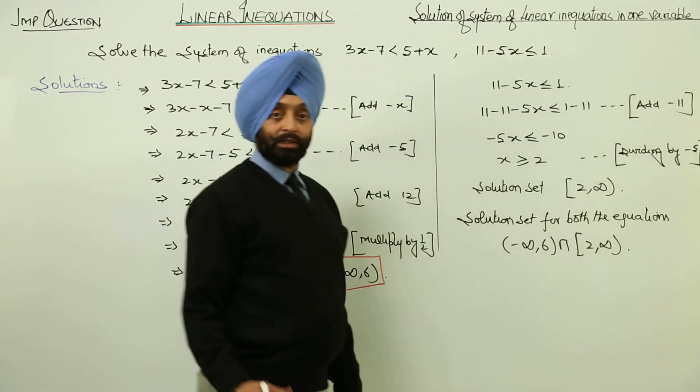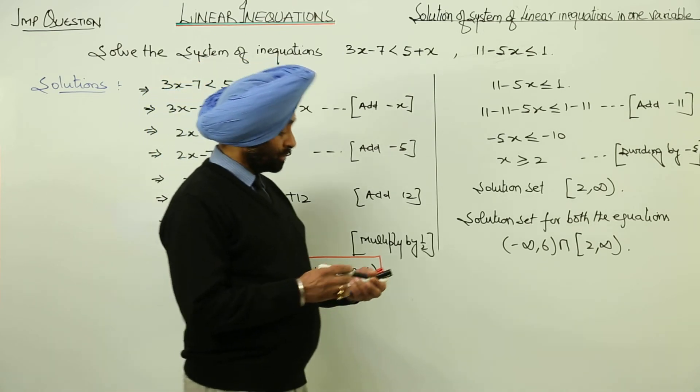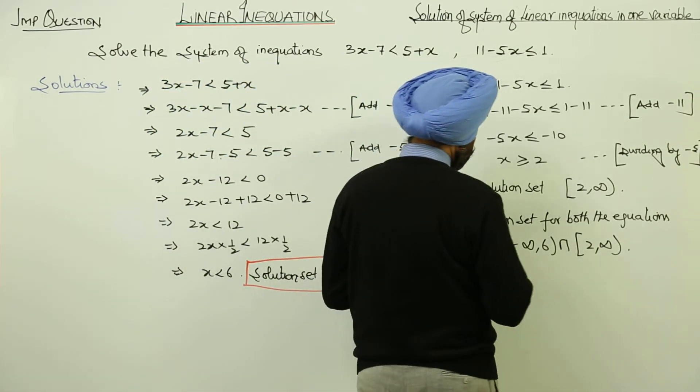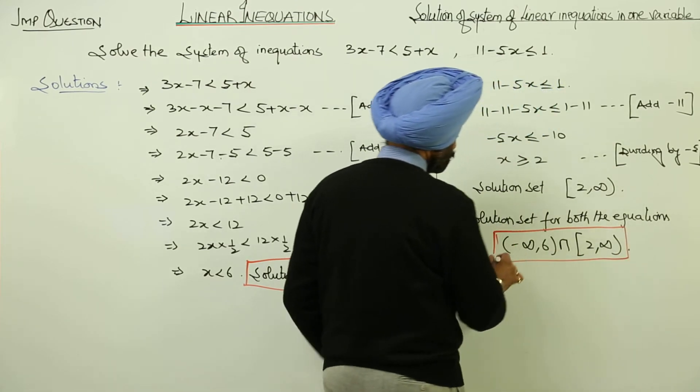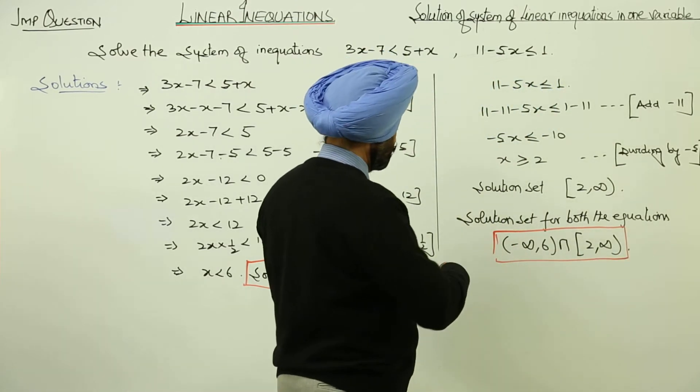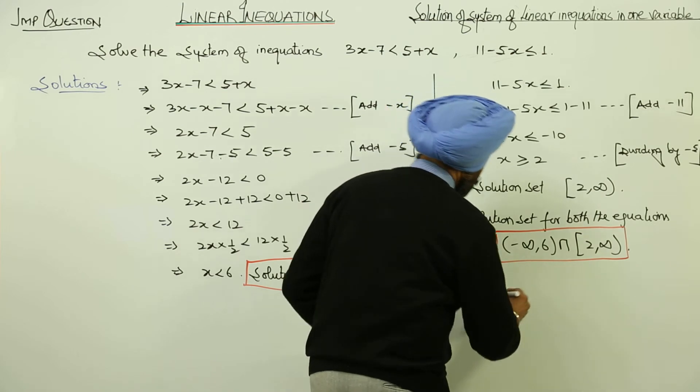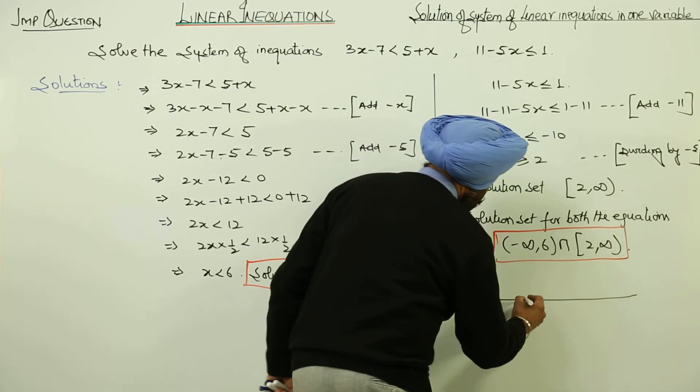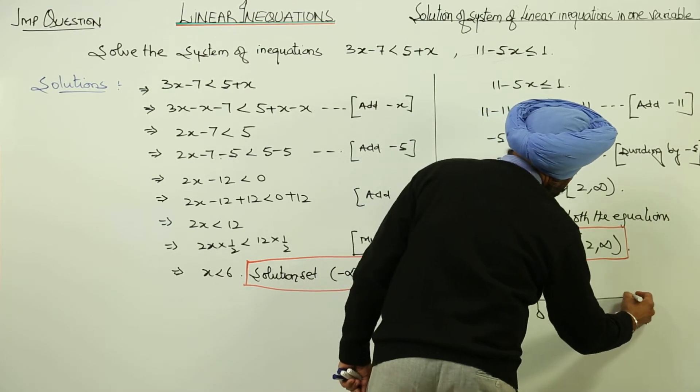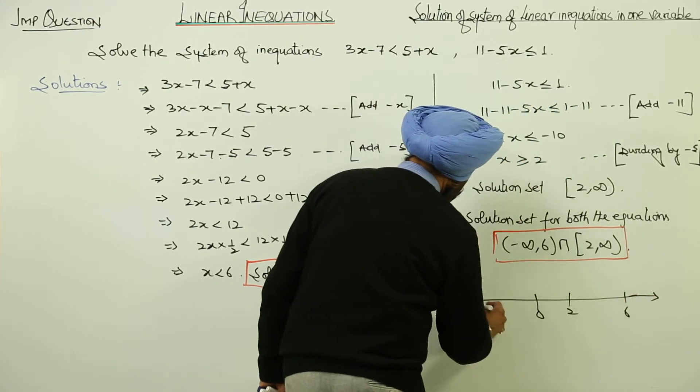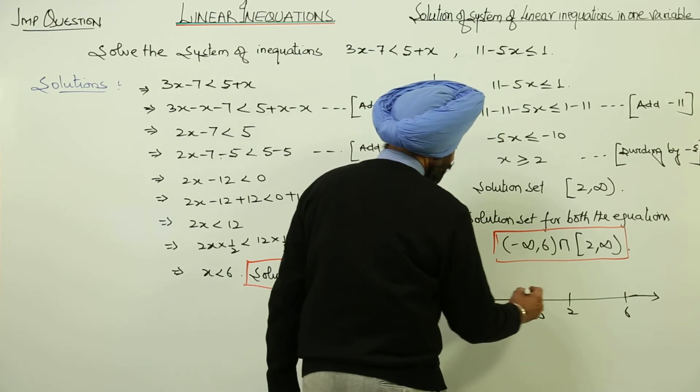Now we have to select the common answer between these two. How to represent this on the number line? This will be represented on the number line as: suppose this is the number line, 0, 2, and let this be 6.